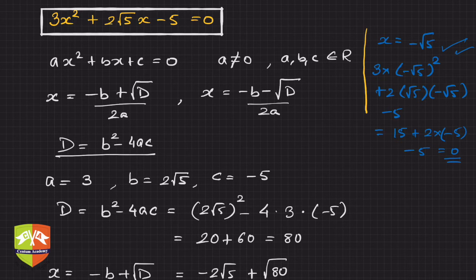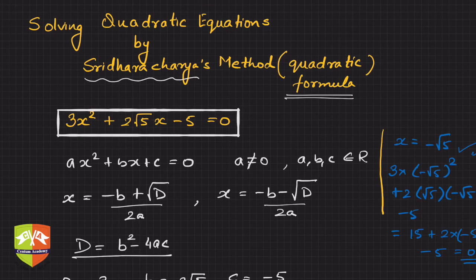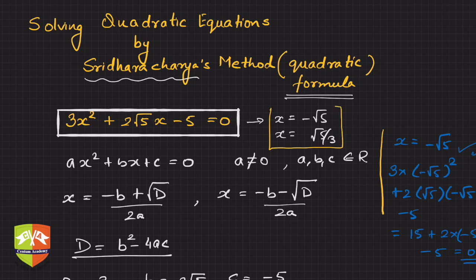Similarly, you can deploy the other value and check. For this, the two solutions are x = -√5 and x = √5/3. You will never get more than two solutions for a quadratic equation.